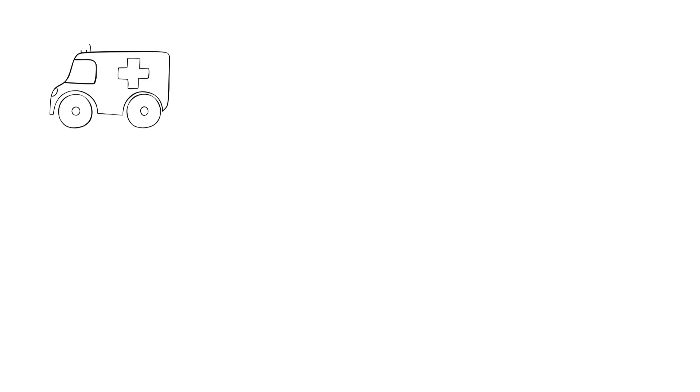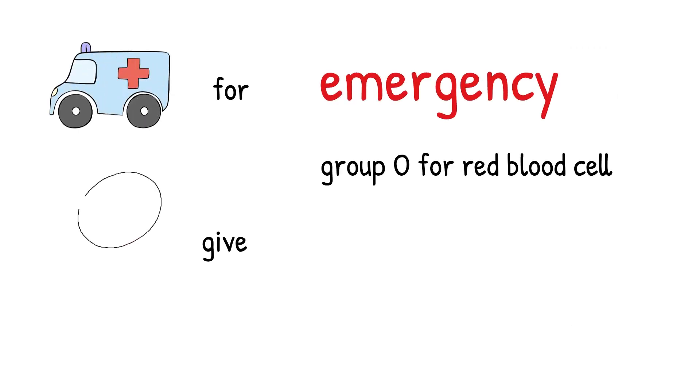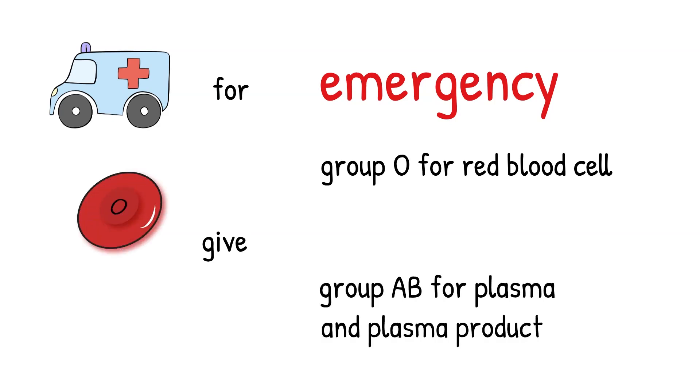However, if the patient needs blood emergently, do not refuse giving blood because you can always give group O for RBC or group AB for plasma and plasma products. I will talk more about blood product choices in emergency cases at a later time. Nonetheless, it is wise to give patients his or her blood type and cross-match compatible whenever it is possible.